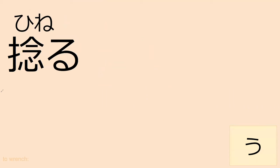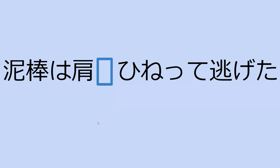Here's our next word, hineru, which is to wrench out — it's kind of like when you do a spinning motion to get out of somebody's hold. How would you say 'the thief wrenched out his shoulders and ran off' in Japanese? 'Dorobo wa kata o hinete nigeta.' Wrenched out the shoulders — kata wo hinete nigeta. Perfect.